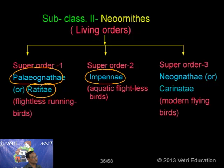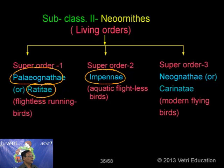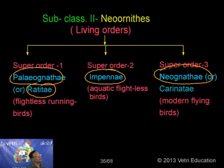Then Impennae, the super order which also includes flightless birds like the penguin, but all are aquatic forms — aquatic flightless birds. Palaeognathae includes ostriches, American ostriches, African ostriches, Emu, Tinamou, Cassowaries, and Kiwis. Impennae includes mainly the penguins, the aquatic flightless birds. And the third super order, Neognathae, also called Carinatae, which includes the modern flying birds. These are all the three super orders under the category of Neornithes, which includes the modern birds, compared with the ancient bird Archaeopteryx.